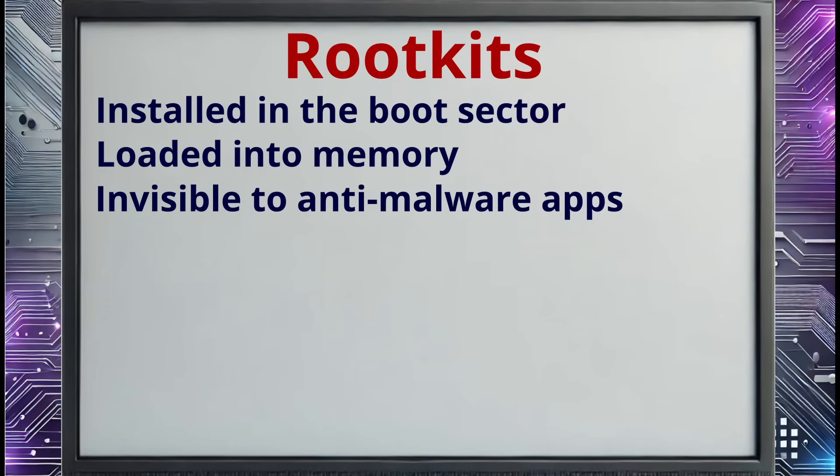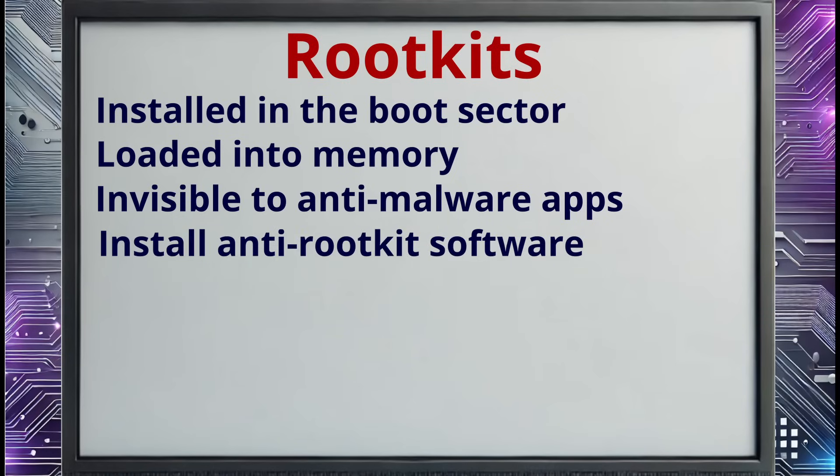There are two different strategies you can use to prevent rootkit infection. The first one is to install anti-rootkit software. However, a better solution is to upgrade to a computer system that uses UEFI firmware instead of the traditional BIOS. This is really cool because the UEFI infrastructure requires an operating system to be digitally signed before it's booted — it's totally designed to prevent rootkits from being booted. On newer versions of Windows, this is done using the secure boot feature.